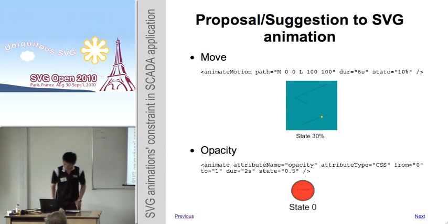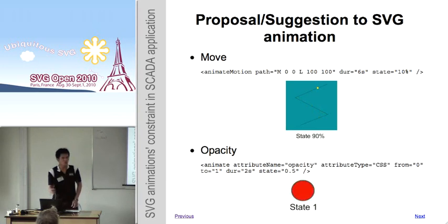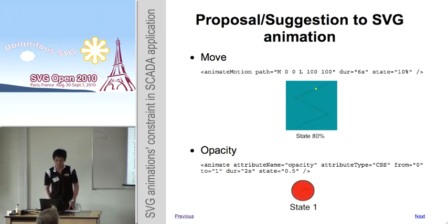For move animation, the state uses a percentage to indicate the current position of the object. The duration works the same as above — it will take 6 seconds to transition from one state to another.